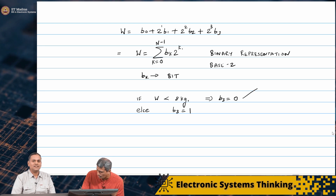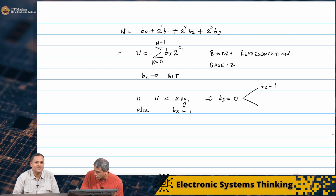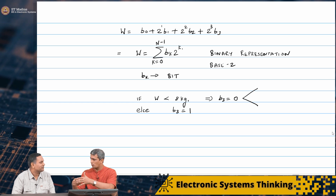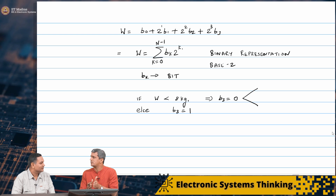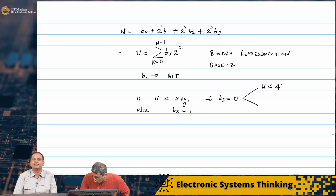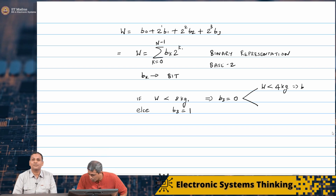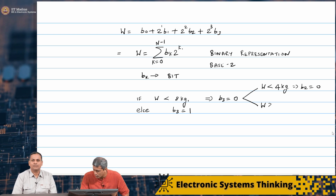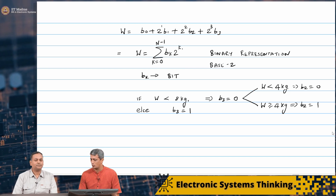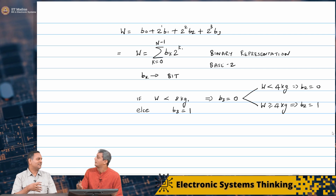It is branching into multiple parts now. If you remove B3 and put B2, we are now looking at whether W is greater than 4 kg. If W is less than 4 kg, then B2 would be set to 0 - implies B2 equals 0. If W is greater than or equal to 4 kg, implies B2 equals 1. So you continue this process and then do it for B1, then for B0.